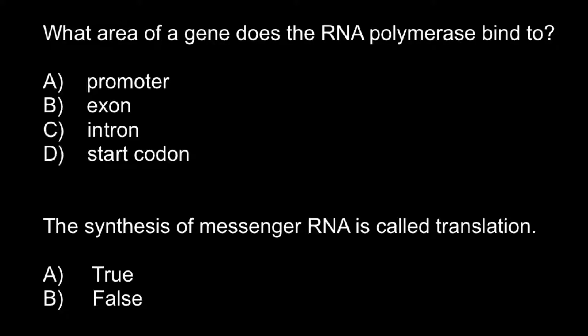So here's the first question: What area of the gene does the RNA polymerase bind to? And here we have four answers to choose from.